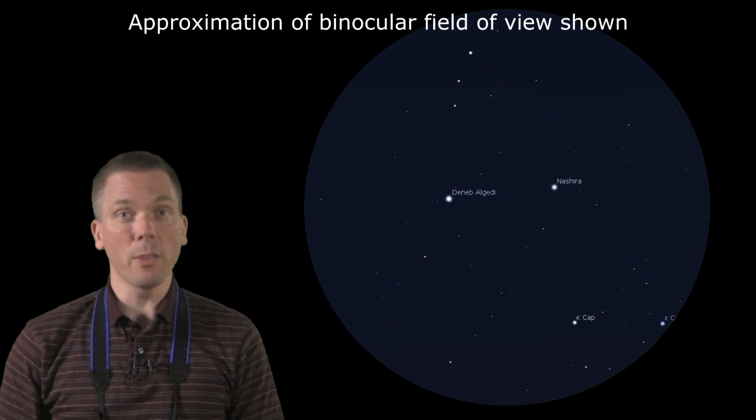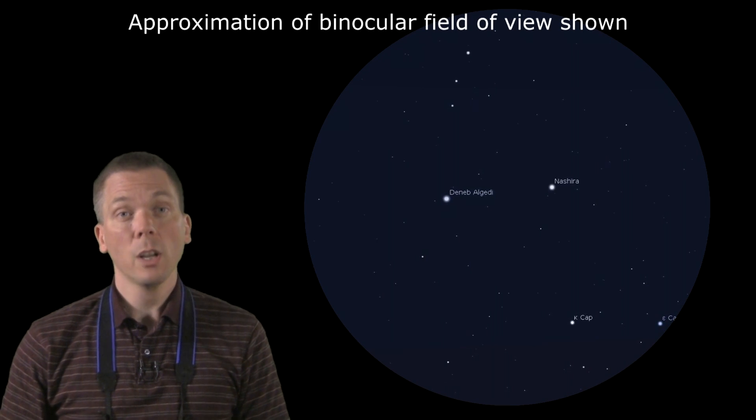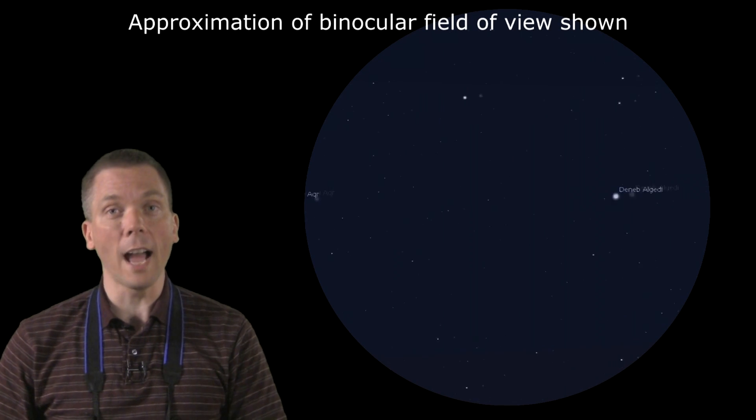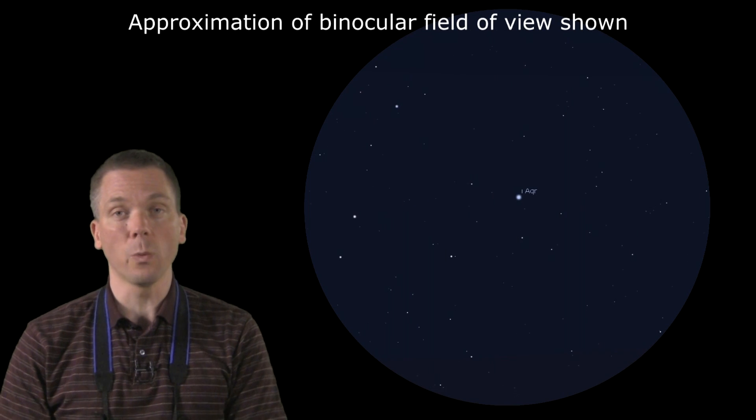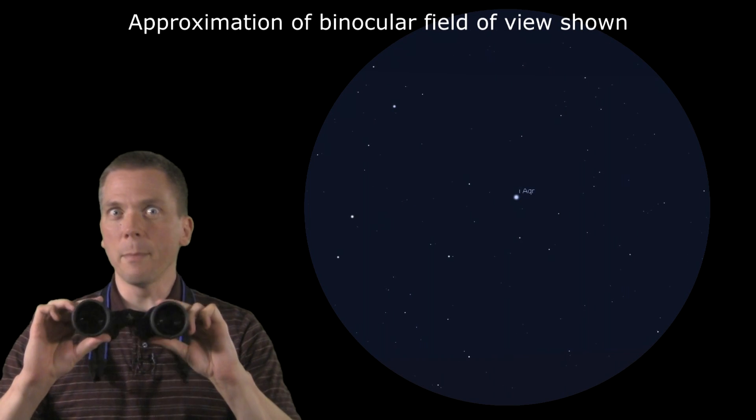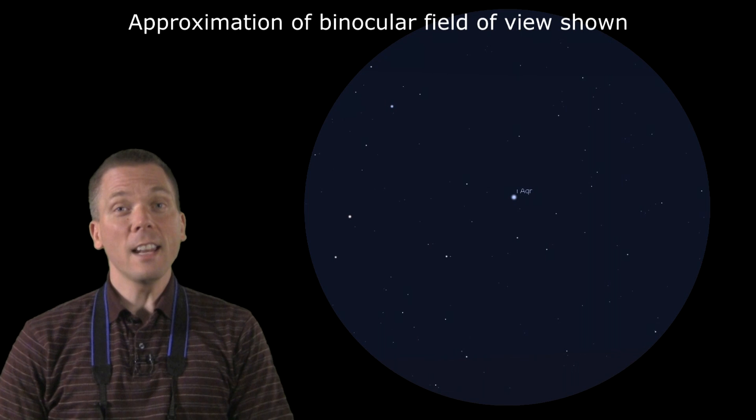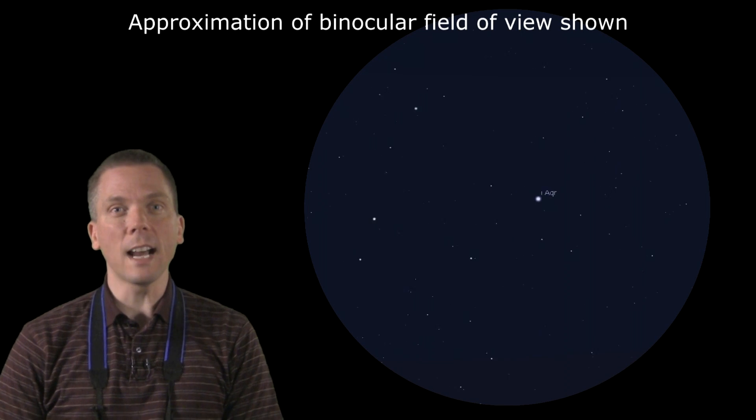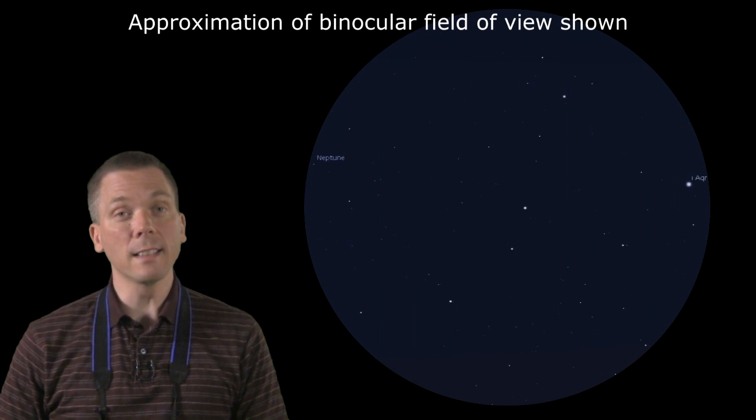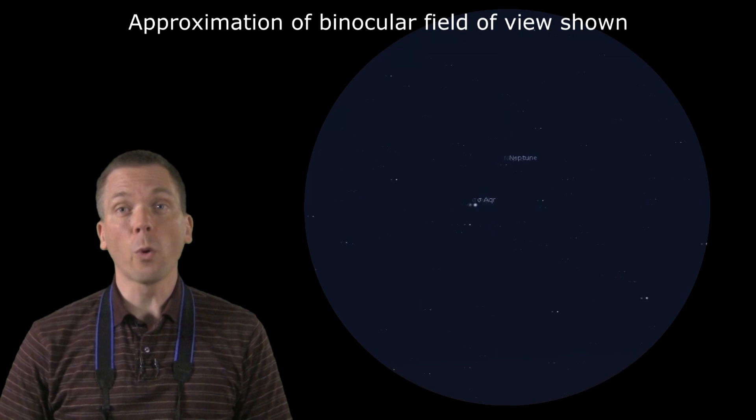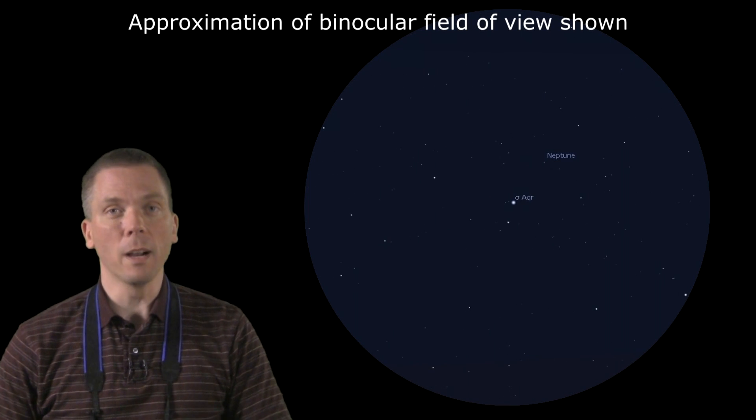Follow the line made by those two stars towards the east, locating 4.3 magnitude Iota Aquarii, just 5 degrees away, or less than a binocular field of view. Then follow the same direction, but this time a degree or so farther, and stop at slightly dimmer, 4.8 magnitude Sigma Aquarii.